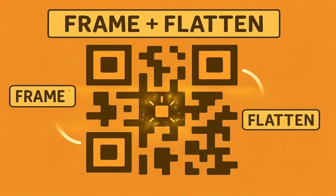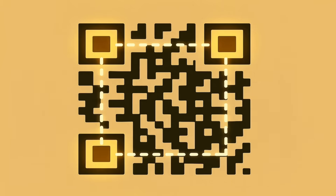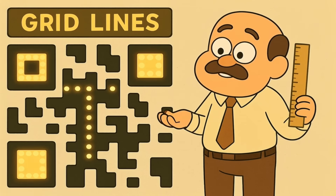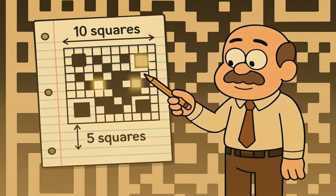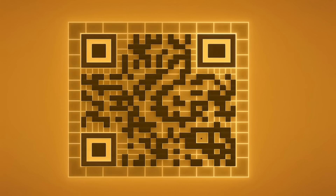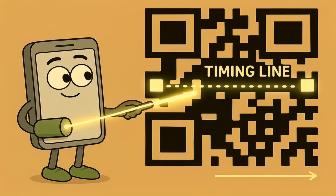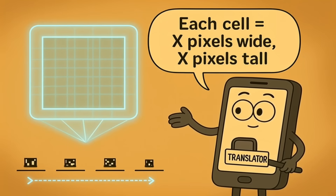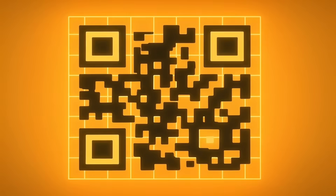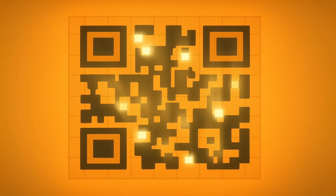We have the three big anchor squares to frame the message and a little straightening square to flatten it out. Now look at the lines that connect the big anchor squares. You'll see a dotted line of alternating black and white squares running from the top left square to the top right square, and another one running from the top left square down to the bottom left square. These are called timing patterns — or a better name for them is gridlines. These gridlines are like the lines on your notebook paper. They tell your phone how big each individual tiny square is and set up the entire grid structure for the code. The phone scans along this dotted line and learns the size of the cells.